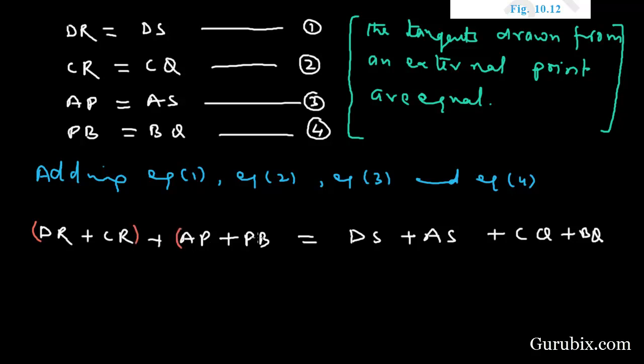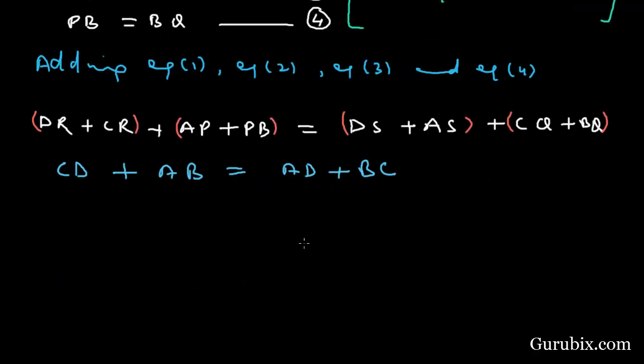So DR plus CR equals CD. AP plus PB equals AB. And DS plus AS equals AD. And CQ plus BQ equals BC. This is the solution of the question.